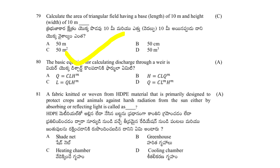The basic equation for calculating discharge through a weir is: A) Q = C × L × H^m; B) H = C × L × Q^m; C) L = Q × L × H^m; D) Q = C × L^m × H^m. The answer is A — Q = C × L × H^m.